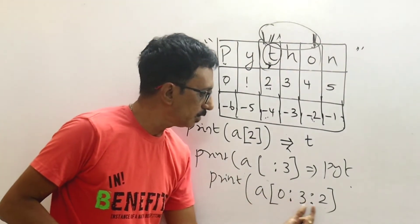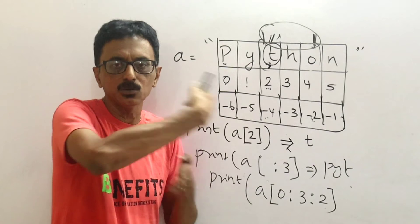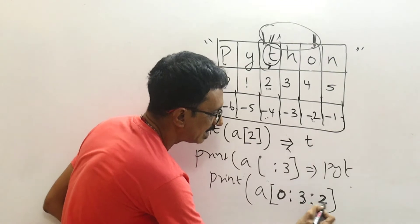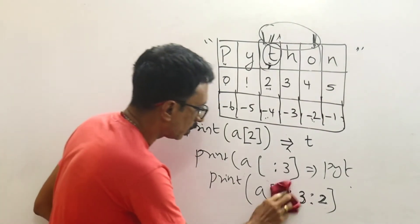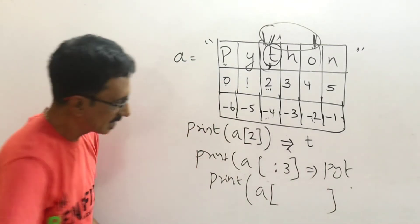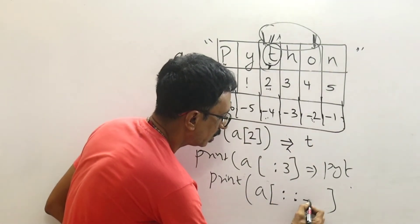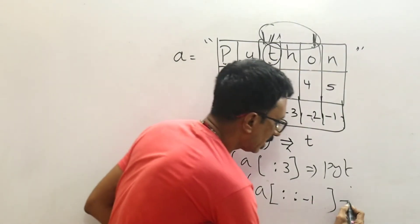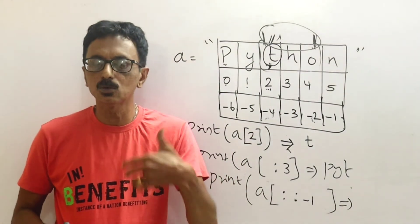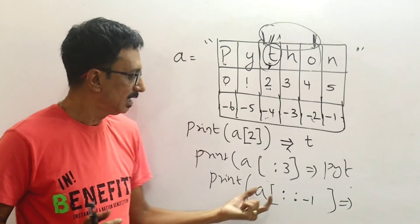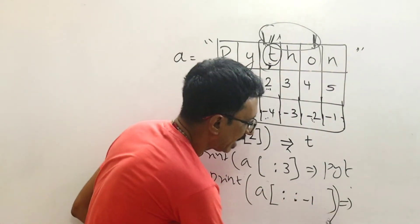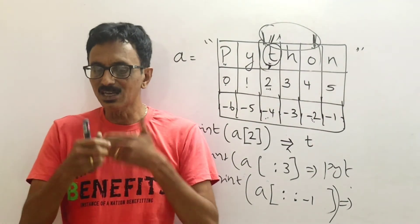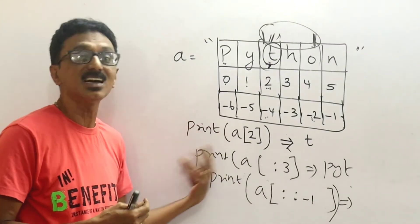a[0] — this is the step. Step is 1. The syntax is: starting position, colon, final position, colon, step. This is the main thing. If you want to write a[-1::-1], you will reverse the string. This is the operation.